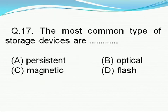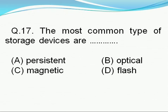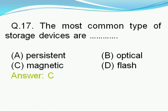Question number 17: The most common type of storage devices are — option A: persistent, option B: optical, option C: magnetic, option D: flash. Right answer is C, i.e., magnetic. Magnetic devices are the most common type of storage devices.